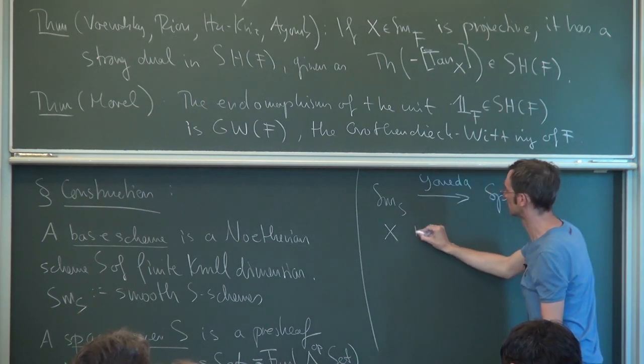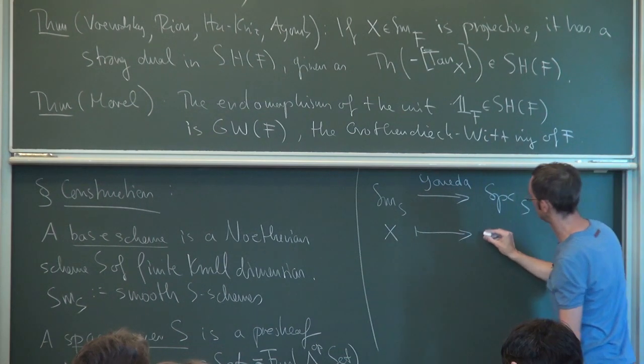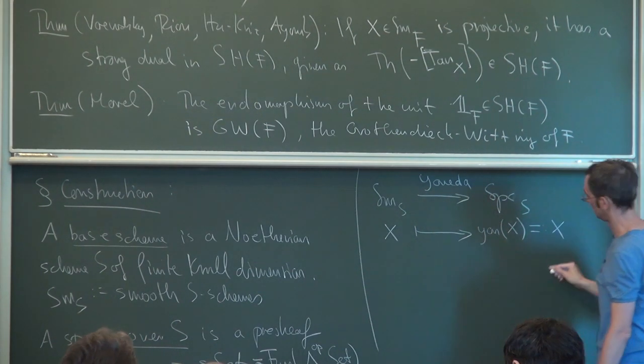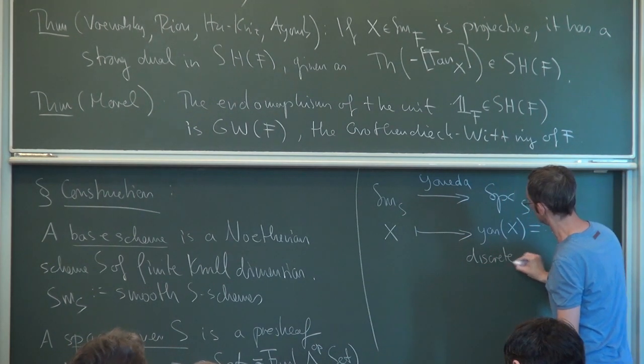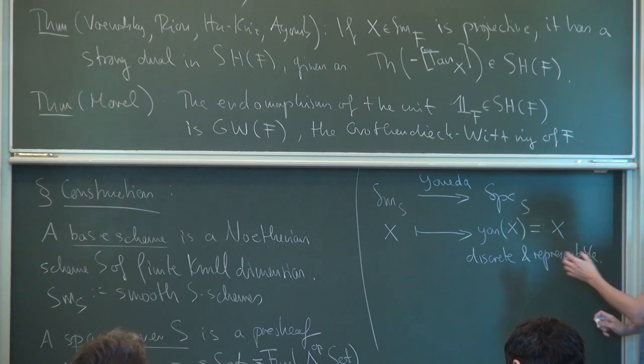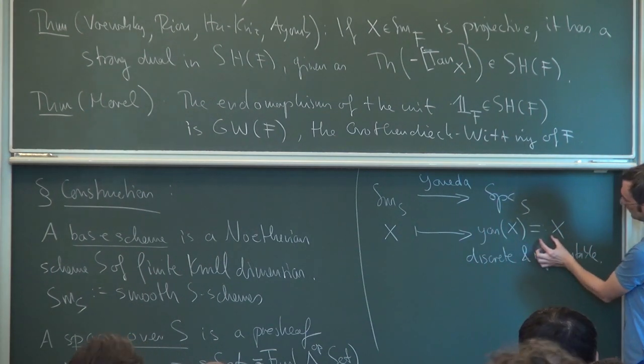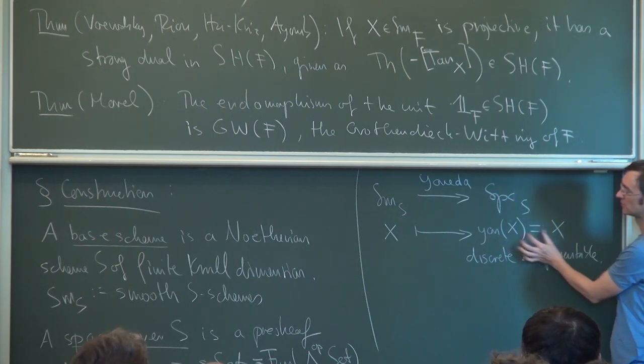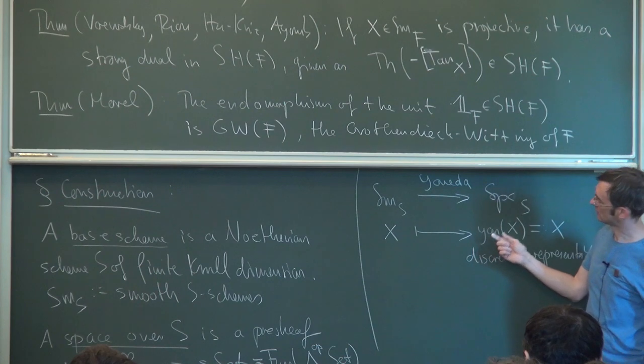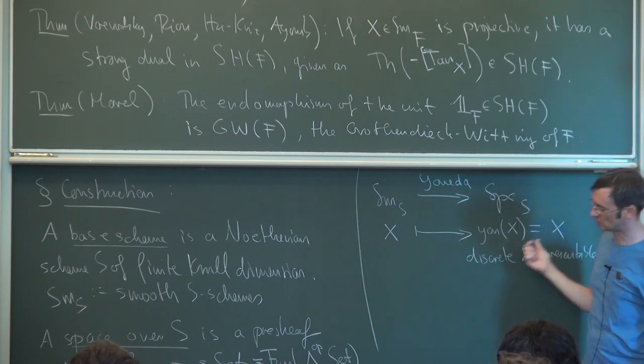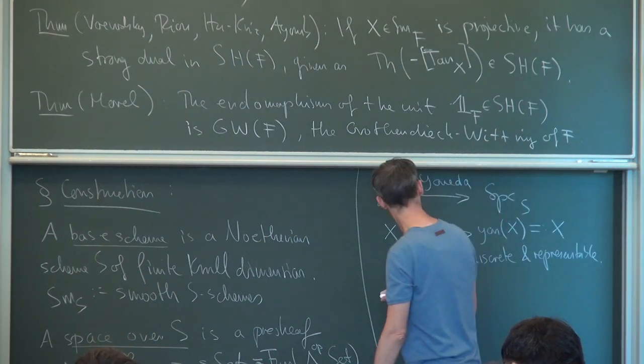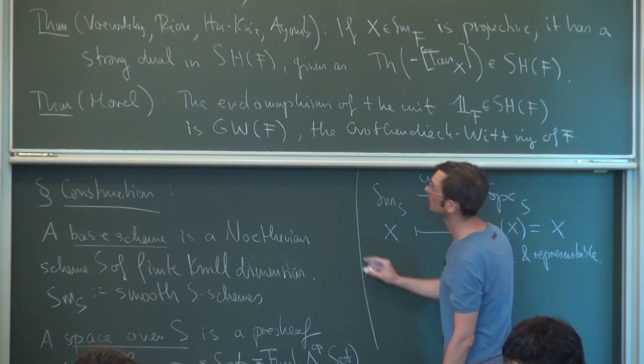So this is the constant space over S—this is one option that we have. The other option is of course to embed smooth varieties over S in spaces using the Yoneda embedding. So if you have X smooth over S, this is sent to Yoneda of X, but I will usually leave this out and just denote it as X. So this is discrete and representable. The simplicial set of maps from Y to X is really just a set of maps from Y to X, and it defines this presheaf.